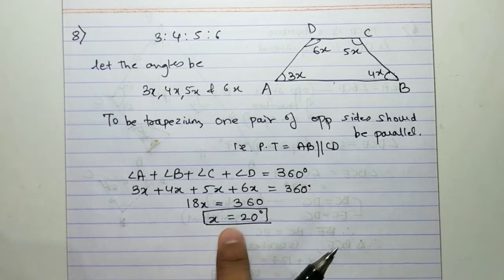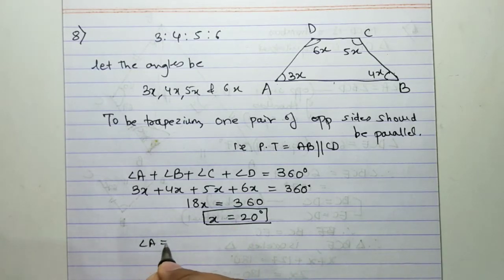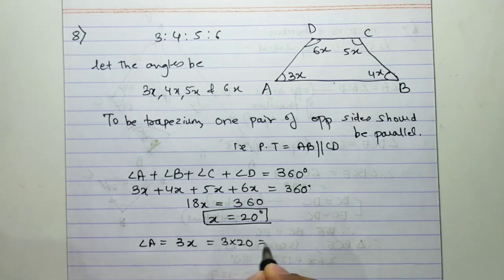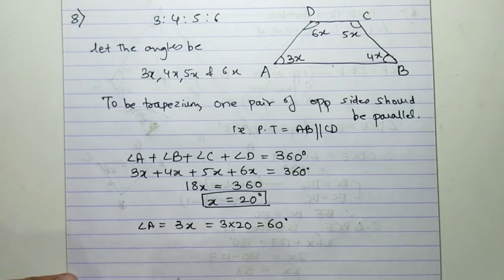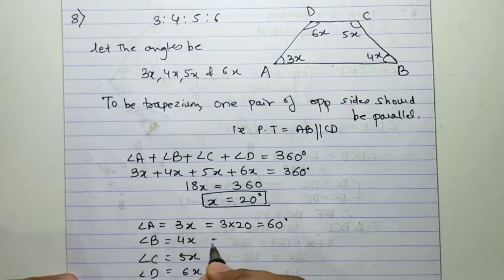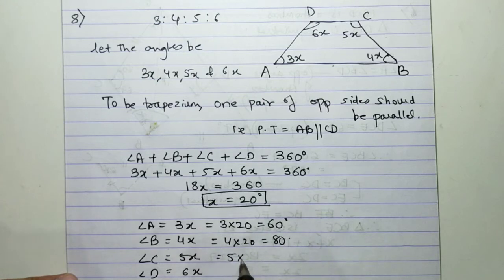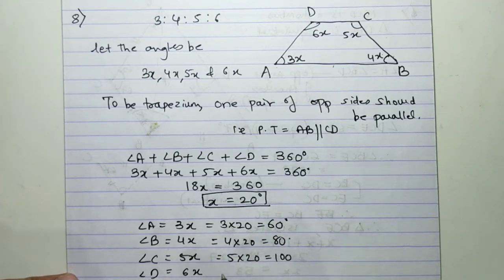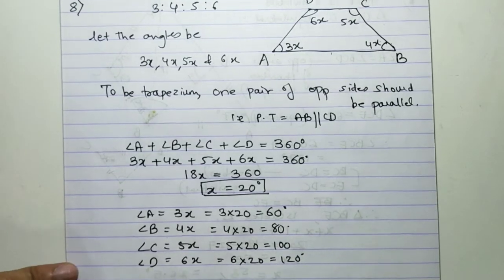Now if x is 20 degrees, then angle A is 3x = 60°, angle B is 4x = 80°, angle C is 5x = 100°, and angle D is 6x = 120°. We get all four angles.